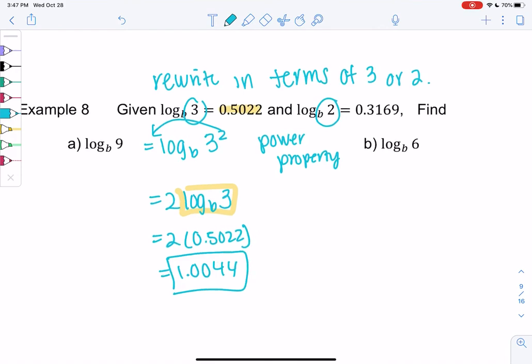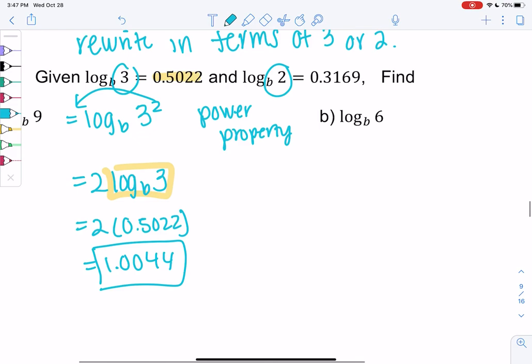So let's do 6. Log base b of 6. So we need to rewrite 6 in terms of 2 and 3. Which it would just be 2 times 3. And then we can use that addition property where log base b of 2 times 3 is really log base b of 2 plus log base b of 3.